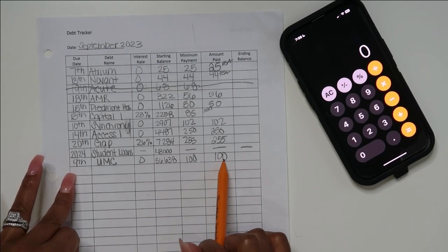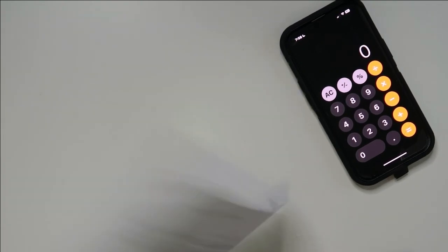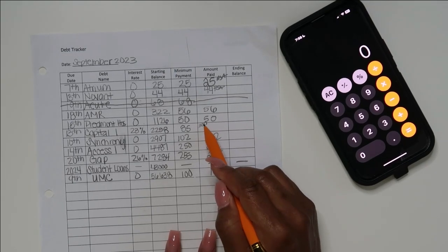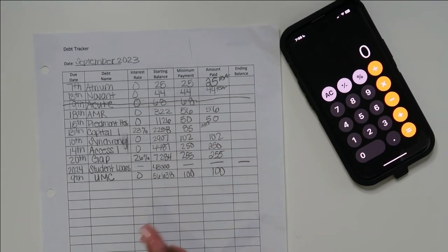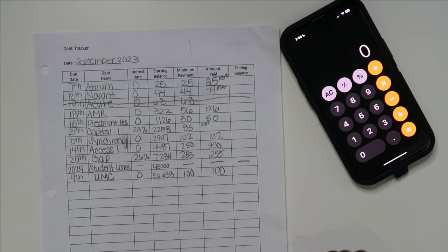UMC I paid $100 towards it so far. So yeah, we're not going to do anything with this just yet simply because I want to pay another $300 on my Capital One, and I do have another paycheck coming at the end of this month.